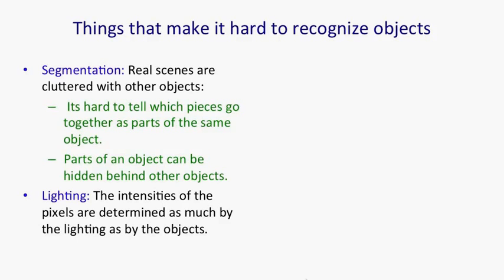Remember, to recognize an object, you've got to convert a bunch of numbers—that is the intensities of the pixels—into a class label. And these intensities are varying for all sorts of reasons that are nothing to do with the nature of the object, or nothing to do with the identity of the object.